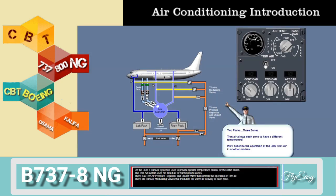Trim air is used to provide specific temperature control for the cabin zones. The trim air system uses hot bleed air to warm specific zones. There is a trim air pressure regulator and shut-off valve that controls the operation of trim air, and there are trim air modulating valves that modulate the warm air delivery to each zone.